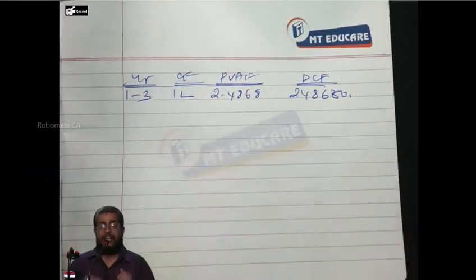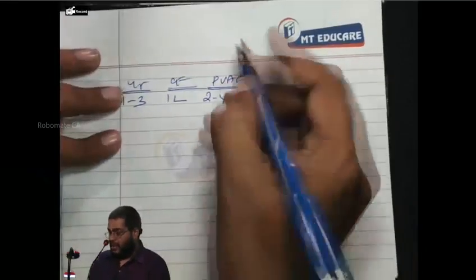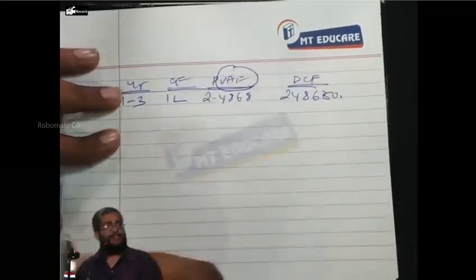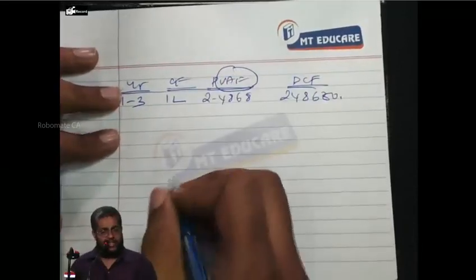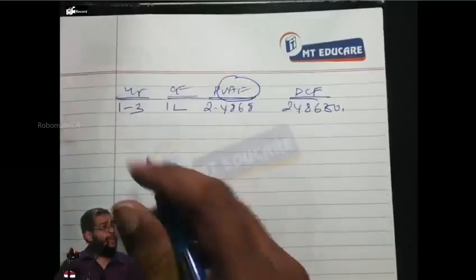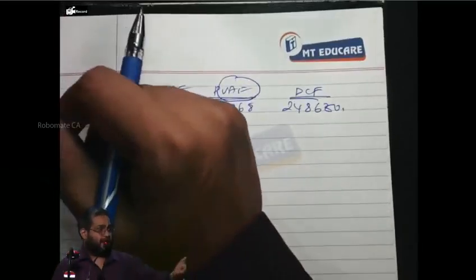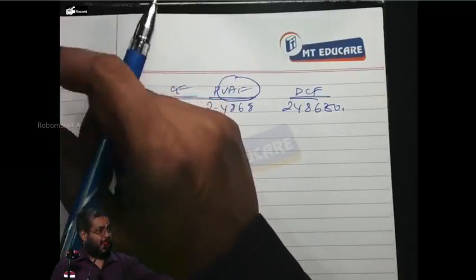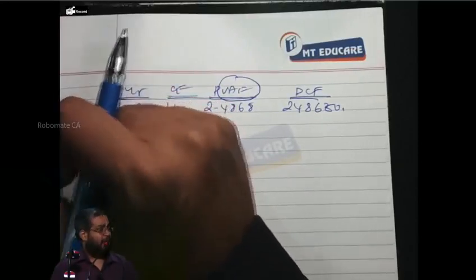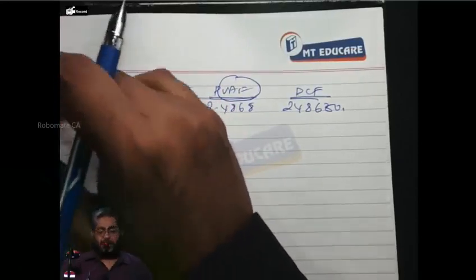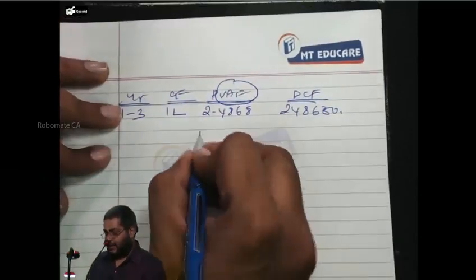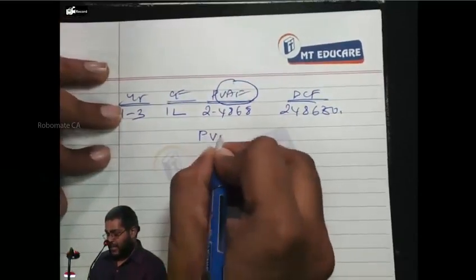The grand total key (GT) on a calculator accumulates all the equals-key results. Press GT to get the annuity factor directly. If your calculator does not have a grand total key, buy one that does — don't use memory plus because you might lose track. Buy a calculator with a grand total key.